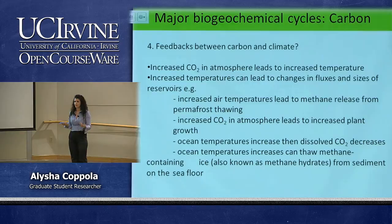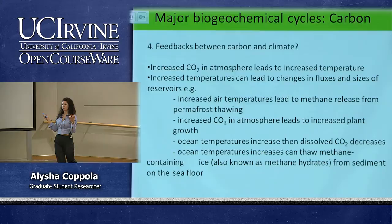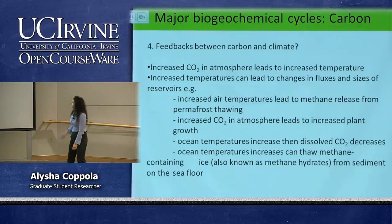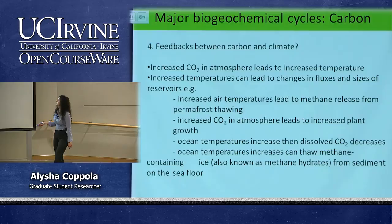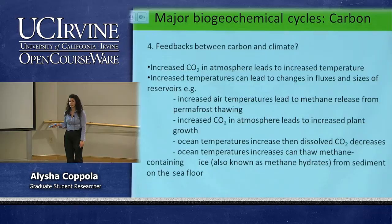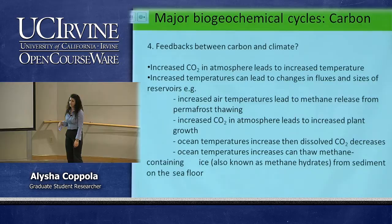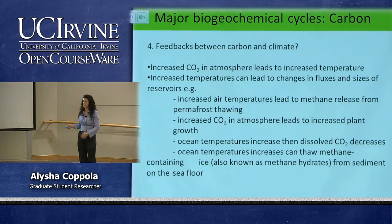Now we'll talk about feedbacks within carbon pools and how they change climate — whether positive or negative. We're increasing CO₂ concentrations in the atmosphere, leading to increased temperatures because CO₂ is a greenhouse gas. These increased temperatures increase fluxes and exchanges between reservoirs. For example, increased air temperatures lead to methane release from permafrost thawing. Permafrost is frozen soil in northern latitudes that contains a lot of carbon. As temperatures increase, this permafrost thaws, microbes decompose it, and previously frozen carbon becomes available to the ecosystem.